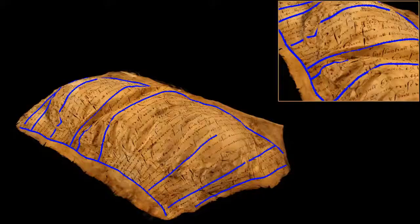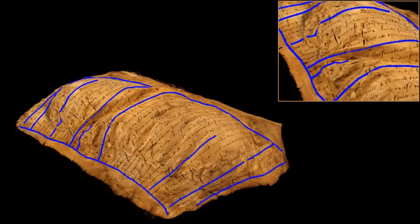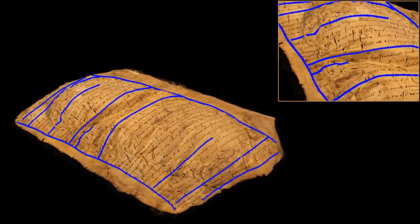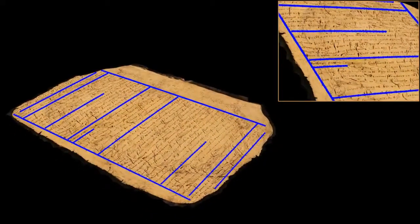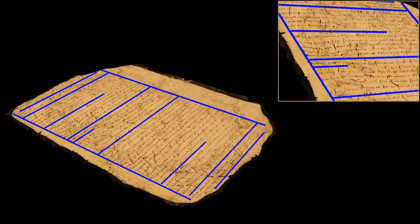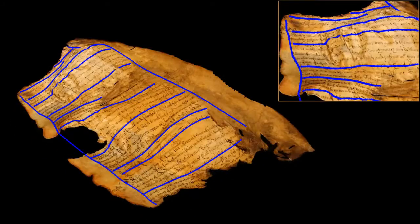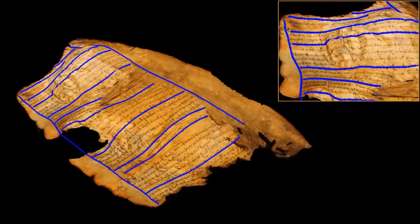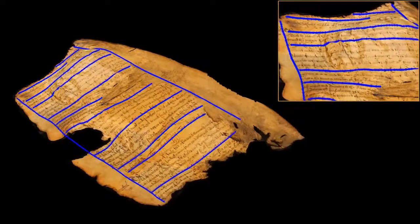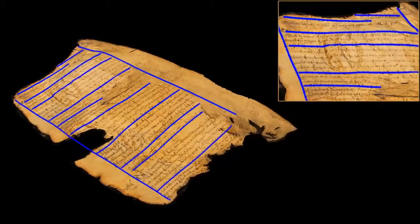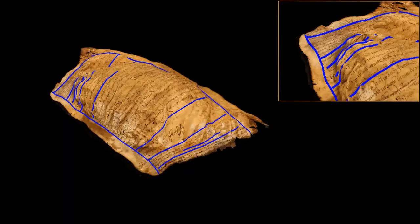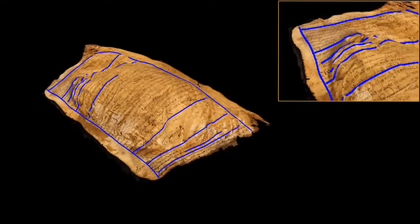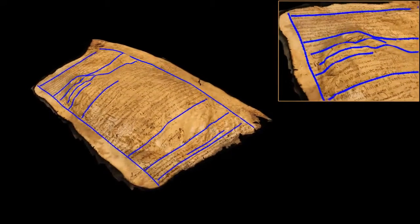We now show a visualization of a series of parchment flattenings. We restore the texture of the pages by performing shading and discoloration removal. The entire pipeline is designed to provide interactive feedback and enables a domain expert to define additional constraints and see their immediate effect.